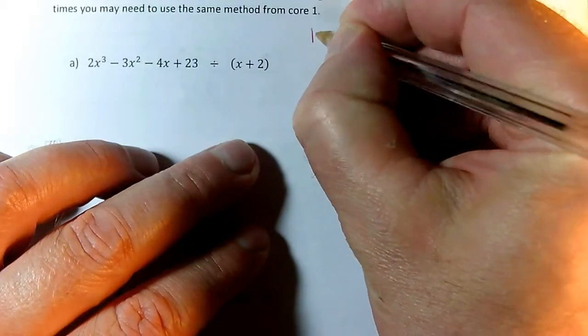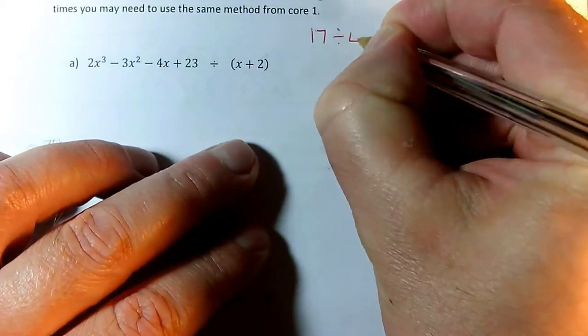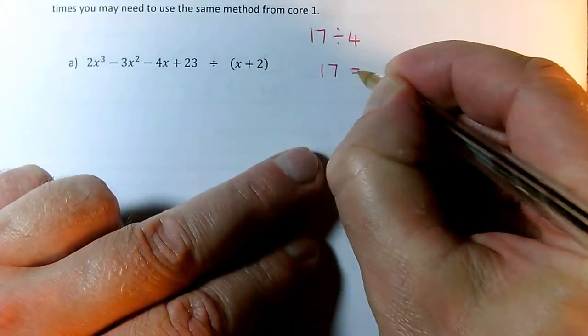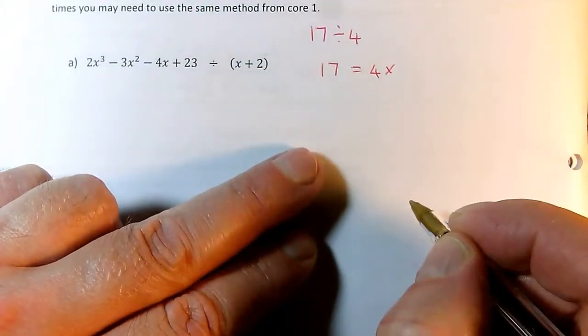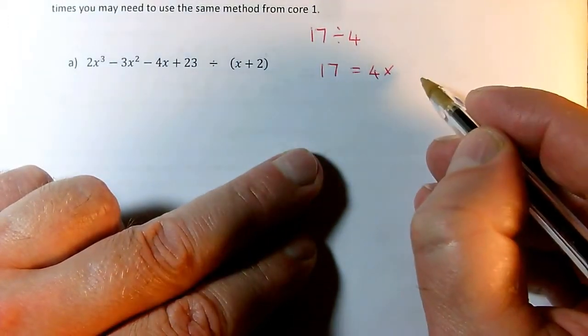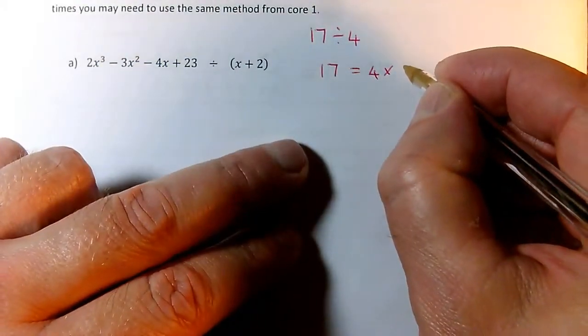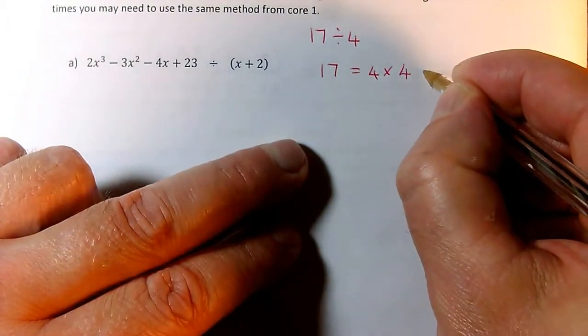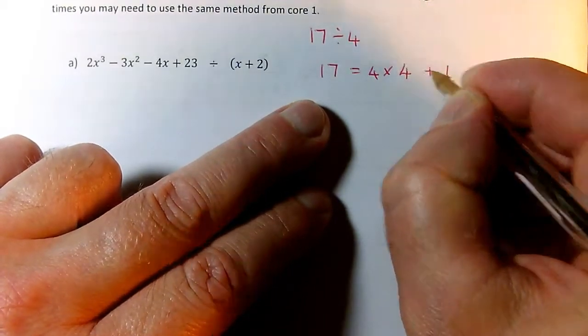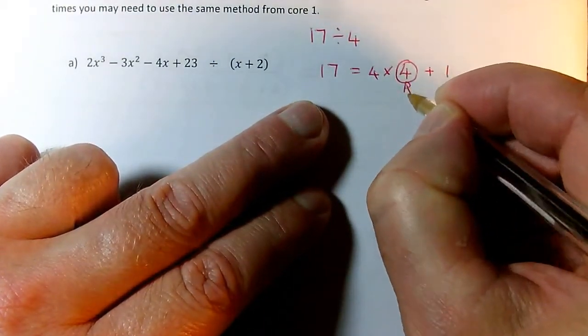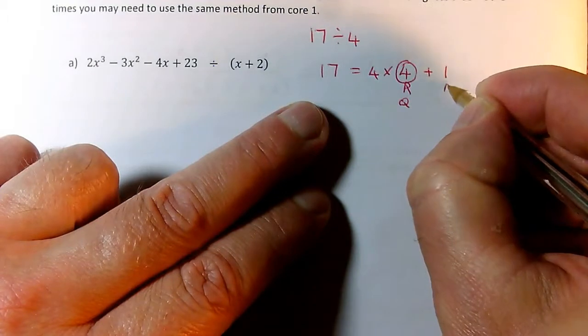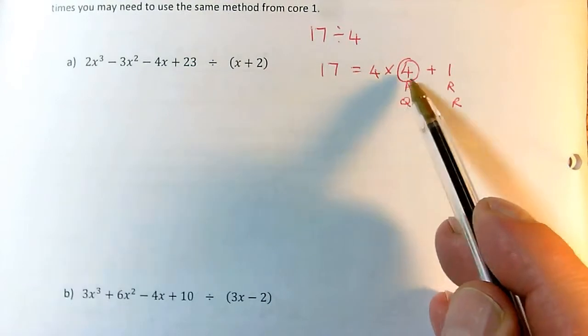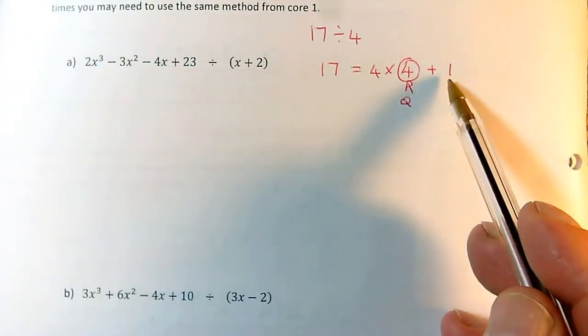So if I'm doing something like 17 divided by 4, that means I'm trying to think about making 17 as 4 times something. So what do I need to multiply 4 by to make 17? Well, I can't do it exactly, but I can do 4 times 4, and then in order to make it come out right I need to add 1. So that means I need 4 of these 4s to make 17, but I have 1 left over.